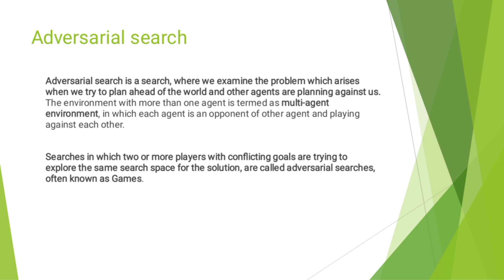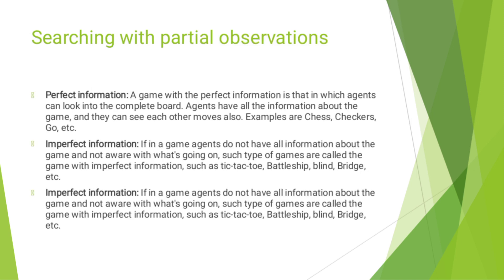That is known as Games. There are four partial observations. The first one is Perfect Information. A game with perfect information is one in which agents can look into the complete board. Agents have all the information about the game and they can see other moves also. For example, chess, checker, go, etc.